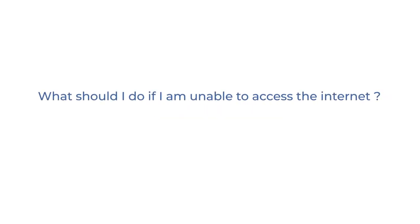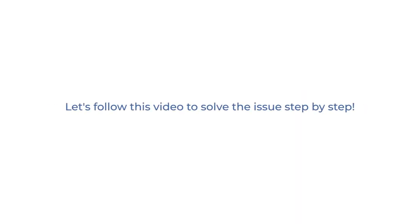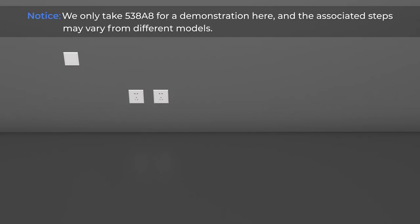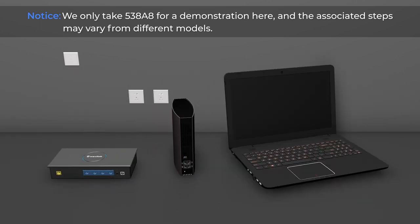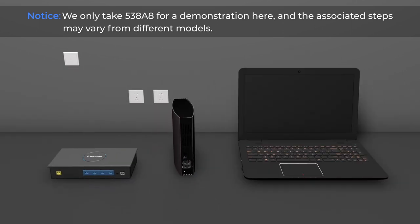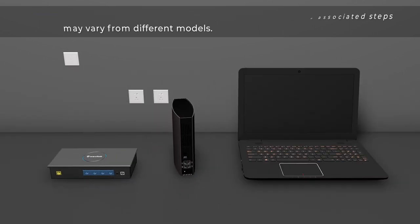What should I do if I am unable to access the Internet? Connecting to a DSL modem and a Wavlink router. Let's follow this video to solve the issue step by step. Notice, we only take model 53888 for a demonstration here, and the associated steps may vary for different models.